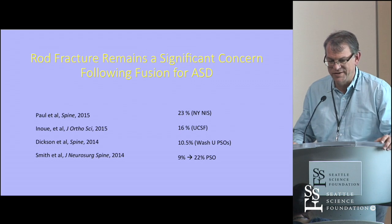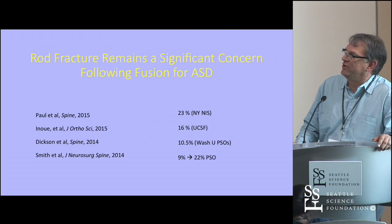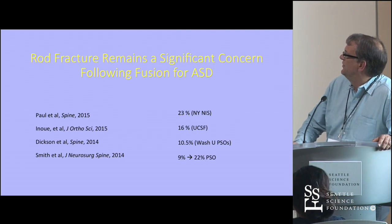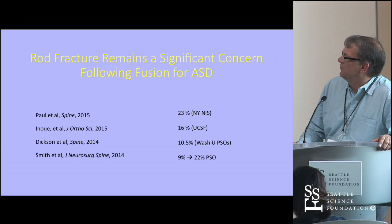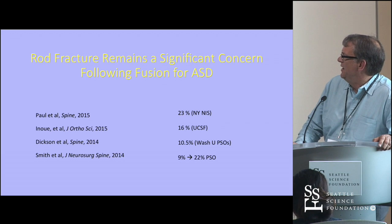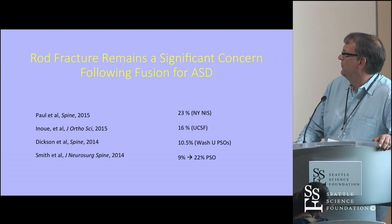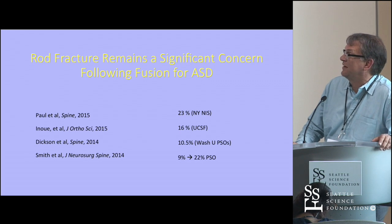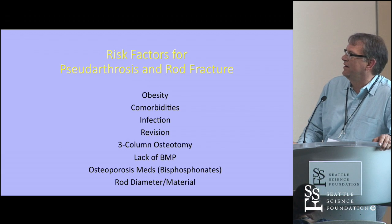Rod fracture continues to be a significant concern in these patients. These series show rates somewhere between 9 to 20 percent depending on the population. The lowest figure is from an ISSG paper — multicenter data collected prospectively but analyzed retrospectively — showing a 9 percent overall rate but a 22 percent rate within pedicle subtraction osteotomy patients. There are higher rates of nonunion as well as adjacent segment problems with large sagittal corrections and three-column osteotomy.